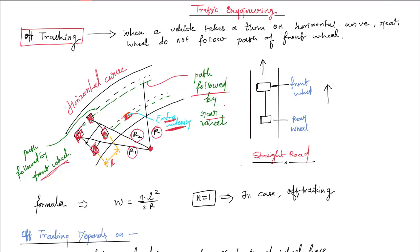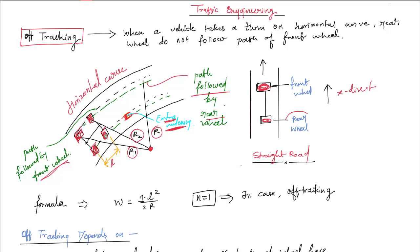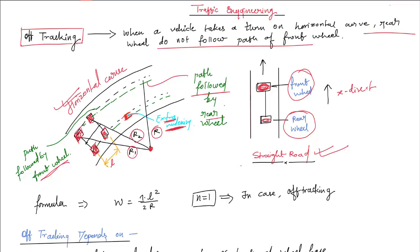This is all about the horizontal curve, but in a straight road — you can see this is the straight road — a vehicle is moving in the x-direction. The rear wheel always follows the path of the front wheel in a straight road. But in a horizontal curve, the rear wheel does not follow the path of the front wheel. In a straight road, we can say the rear wheel follows the track of the front wheel.